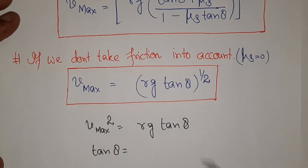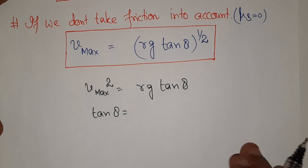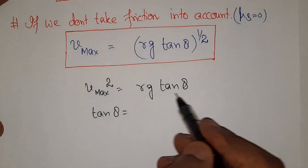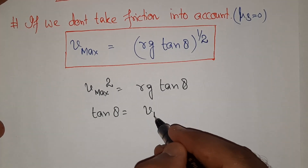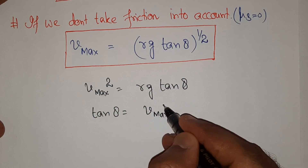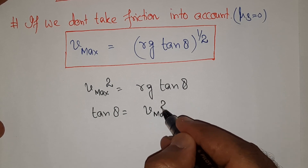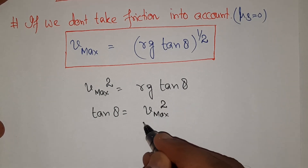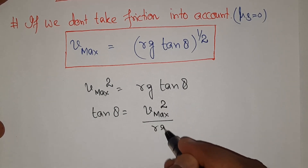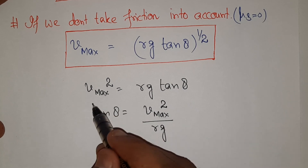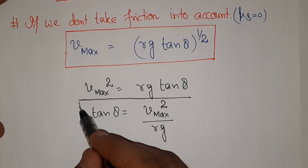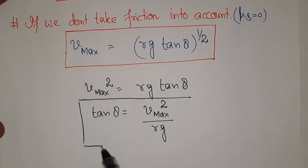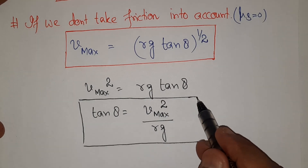For a particular situation where a particular maximum speed is desired, squaring both sides gives v_max² = rg·tanθ, so angle of banking θ = arctan(v_max²/rg). Correspondingly, you can also find the angle of banking.